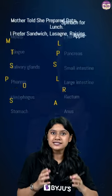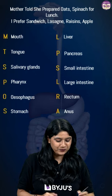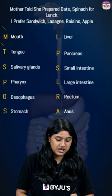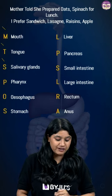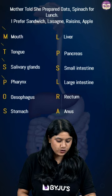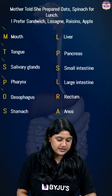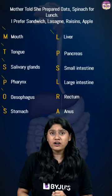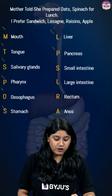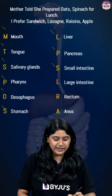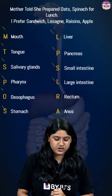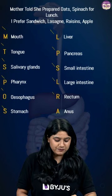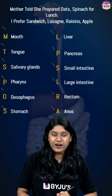Let's see what these stand for. M for mouth, T for tongue, S for salivary glands, P for pharynx, O for esophagus, S for stomach, L for liver, P for pancreas, S for small intestine, L for large intestine, R for rectum and A for anus.